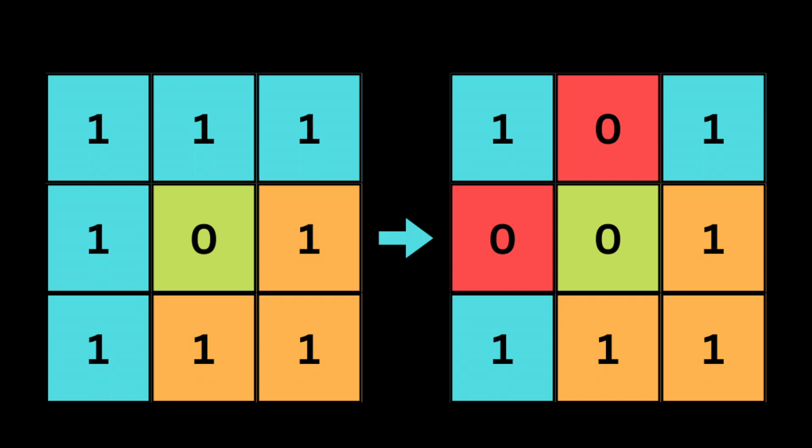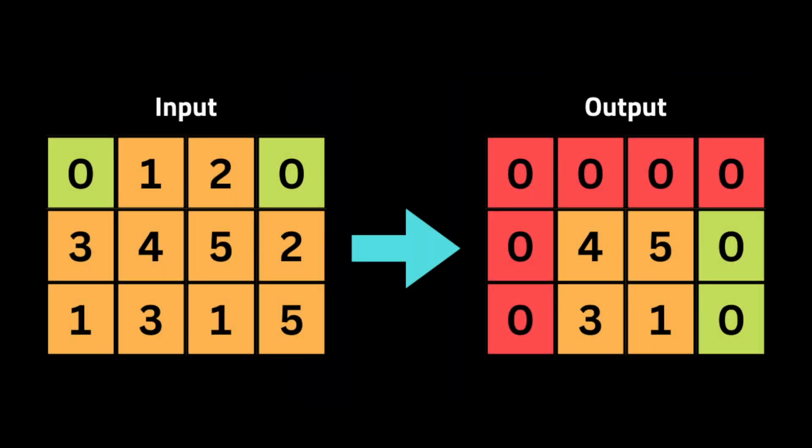If we find zeros, we modify the first row and column and set them as flags so we know where there are zeros in the matrix. Then we loop over the rest of the matrix again, and for every element, based on the flags we've made, we check if either the element in the same row of the first column or the element in the same column of the first row is zero — and if so, we set that element to zero.